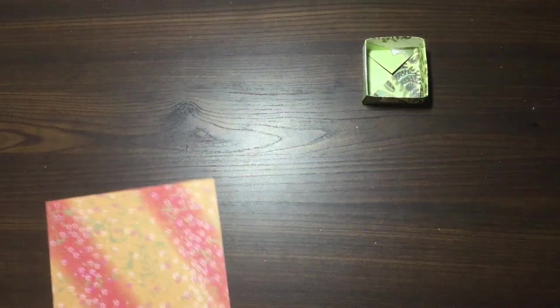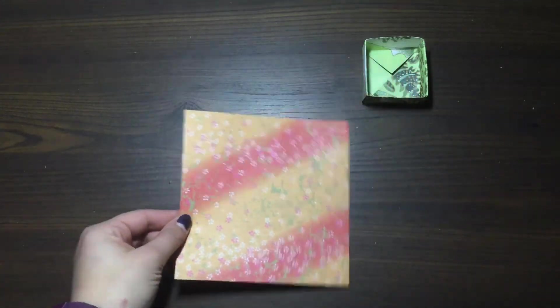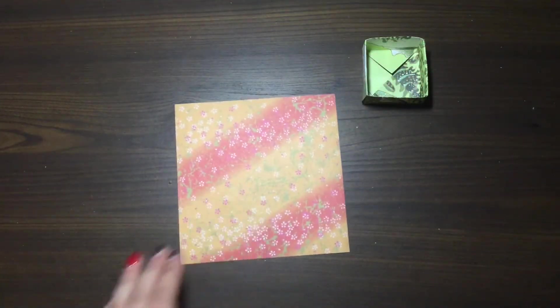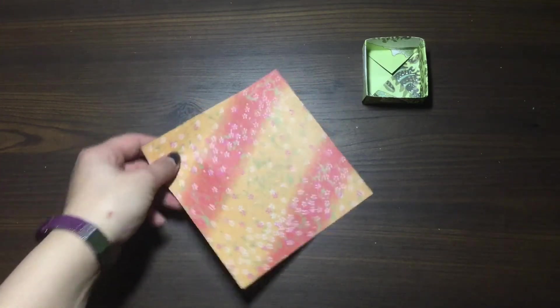So first just start by picking out your paper that you'd like. You can do this with any size or sheet of paper, as long as it is a square. So I've chosen this from one of my many collections of origami paper.